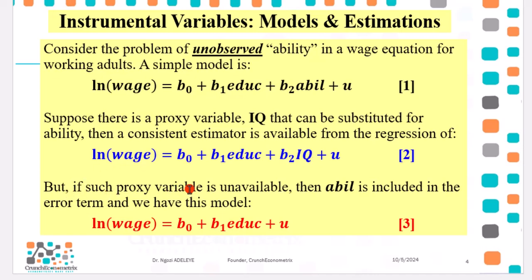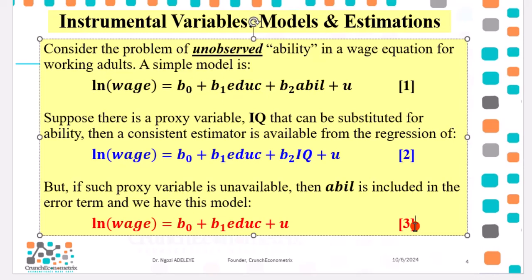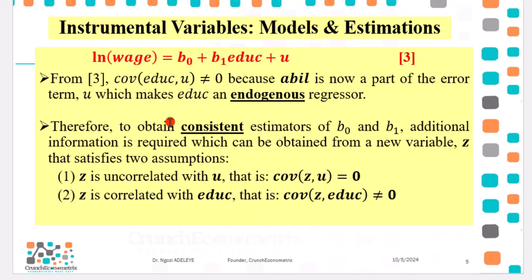But what if such proxy variable is not available? That means ability will be included in the error term as we have in equation three. So because we cannot find a variable called ability, that means ability will be part of the error term. From equation three, we can clearly see that education and the error term will now have a correlation. Because ability is now included as part of the error term, making education to be an endogenous variable.